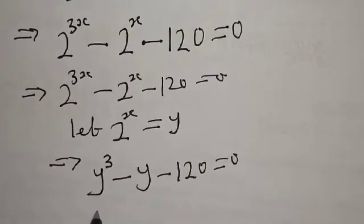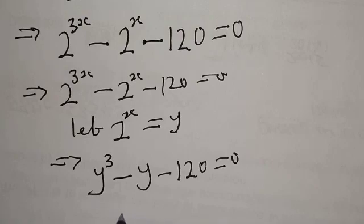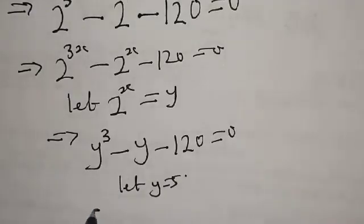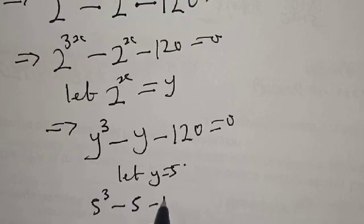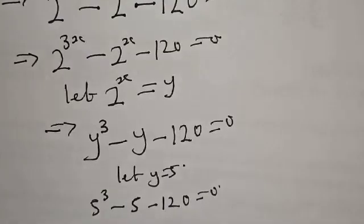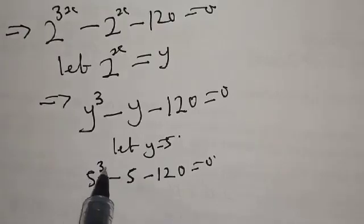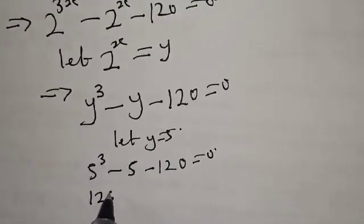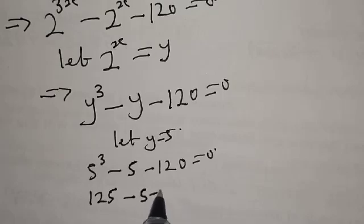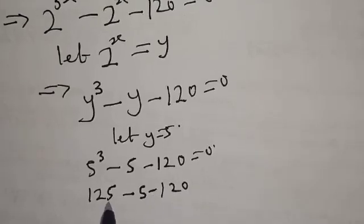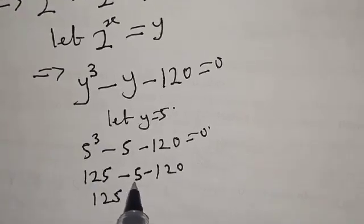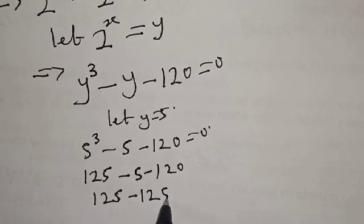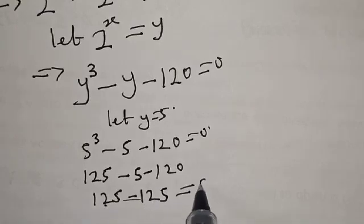Let's factorize. We can verify by substituting Y equals 5: 5 raised to power 3 minus 5 minus 120 gives us 125 minus 5 minus 120, which equals 0. So Y minus 5 is confirmed as one of the factors.